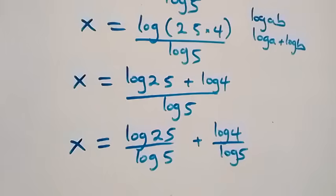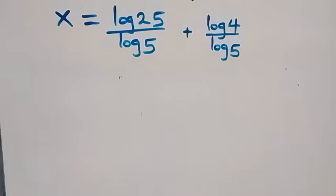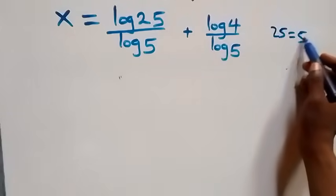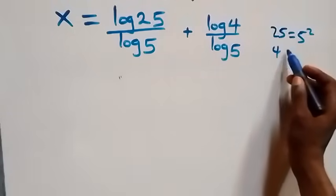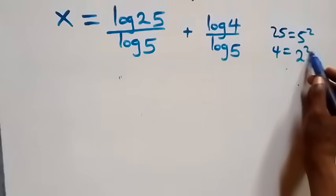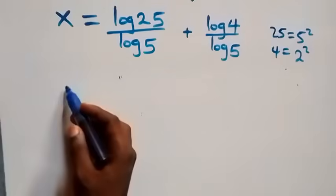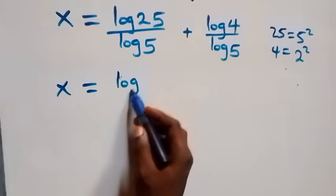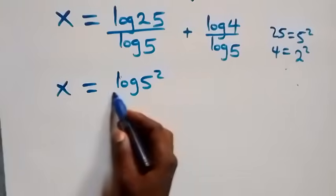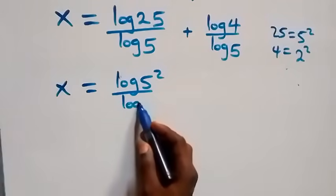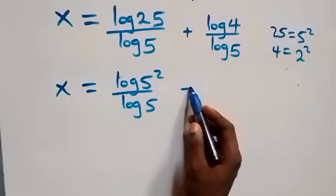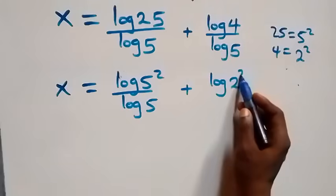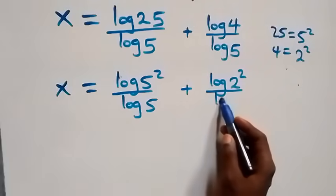Now we can express 25 as 5 times 5, which is 5 squared, and also 4 as 2 times 2, which is 2 squared. Then what we have becomes x equals to log(5²) over log 5, plus log(2²) over log 5.